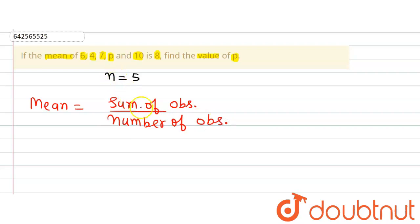So, now we have sum of observations, that is add these observations. So, putting in the values we will get mean is equal to, mean is already given, mean is given as 8. So, 8 is equal to sum of observation, that is 6 plus 4 plus 7 plus p plus 10 divided by number of observation, that is 5.